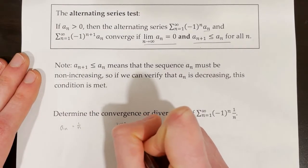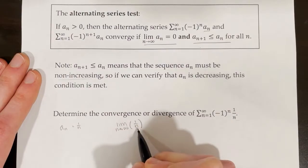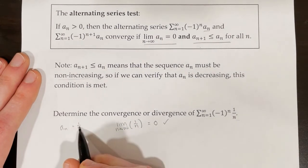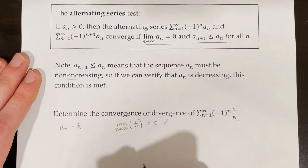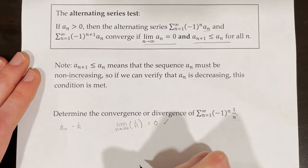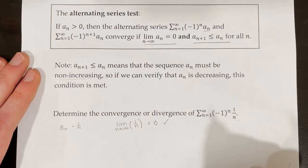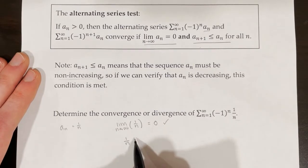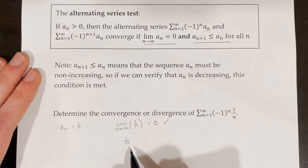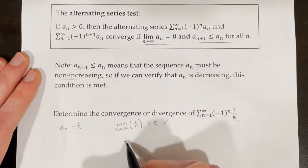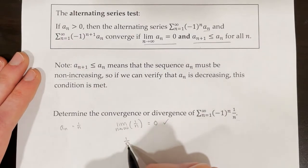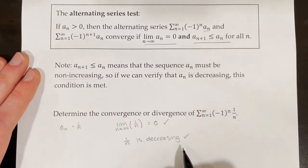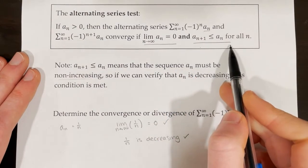The limit as n approaches infinity of 1 over n equals 0, so that condition is met. We also need to show that 1 over n is decreasing. You could take the derivative, but for simpler functions we can just observe: plugging in larger and larger numbers in the denominator makes the fraction smaller and smaller, so 1 over n is clearly decreasing. Since both conditions are met, the series converges by the alternating series test.